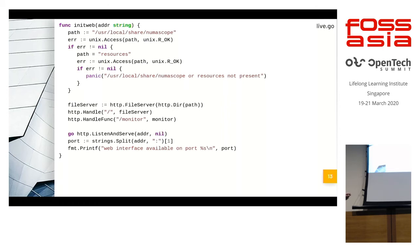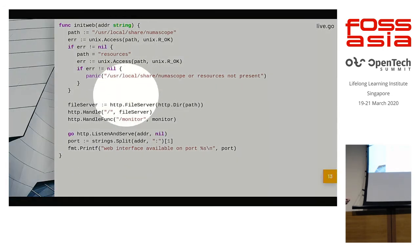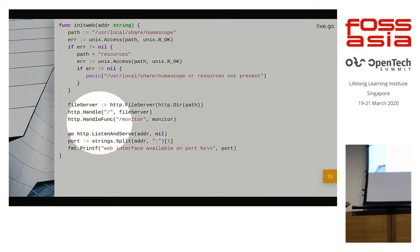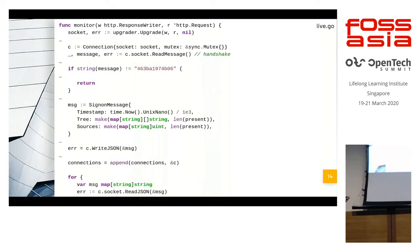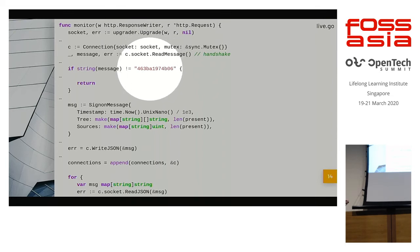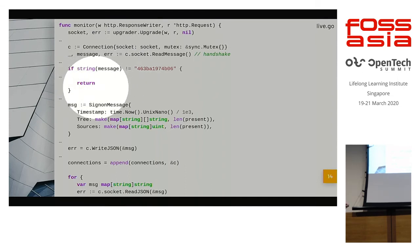Here is the function that starts the HTTP server. It calls HTTP.fileserver on a certain directory, and says if the client accesses /monitor, call the function monitor. Monitor handles WebSockets. The 'go' keyword prefix makes HTTP listen and serve asynchronous, so it's now serving HTTP requests concurrently.